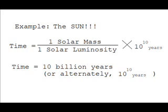This makes sense because that's what we've learned in class — the Sun is going to exist on the main sequence for 10 billion years. So if you have a different star, you plug in the number of solar masses, divide it by the number of solar luminosities, and multiply it by 10 to the 10th power years.